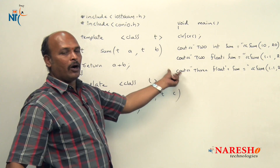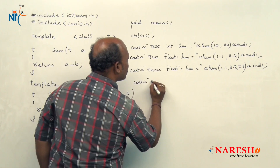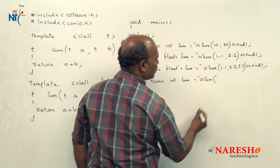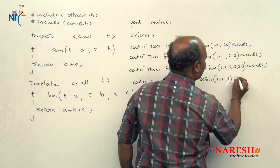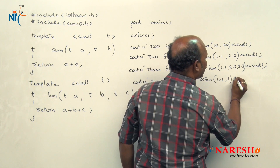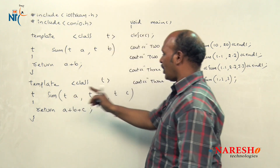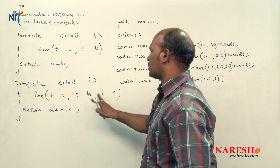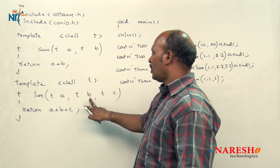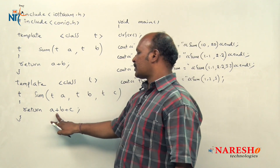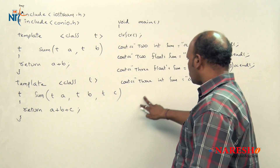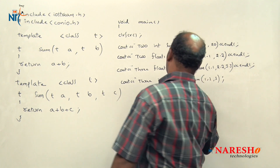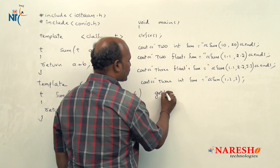Next, `sum(1, 2, 3)` is called — it links with the three-argument function because three integer arguments are passed. a becomes 1, b becomes 2, c becomes 3, and `1 + 2 + 3 = 6` is returned and printed by `cout`: three integer sum equals 6. Then `getch()` is called and the program is completed.